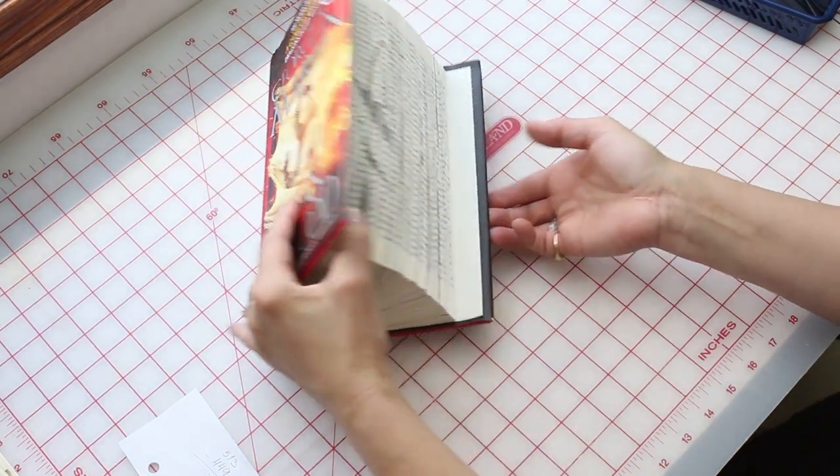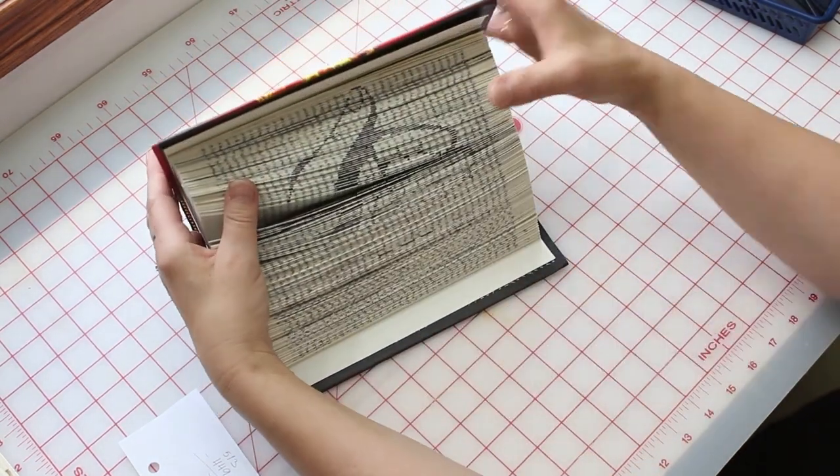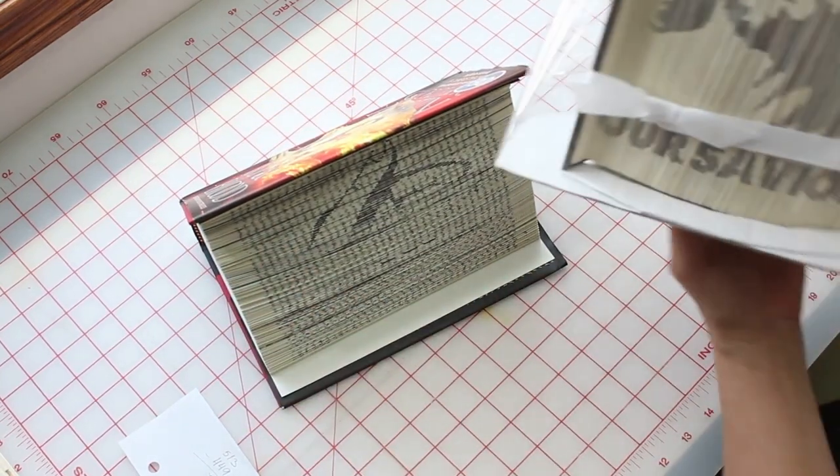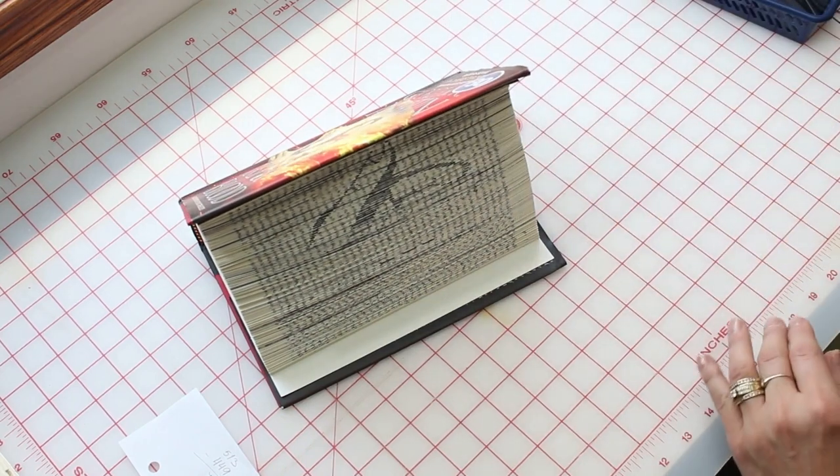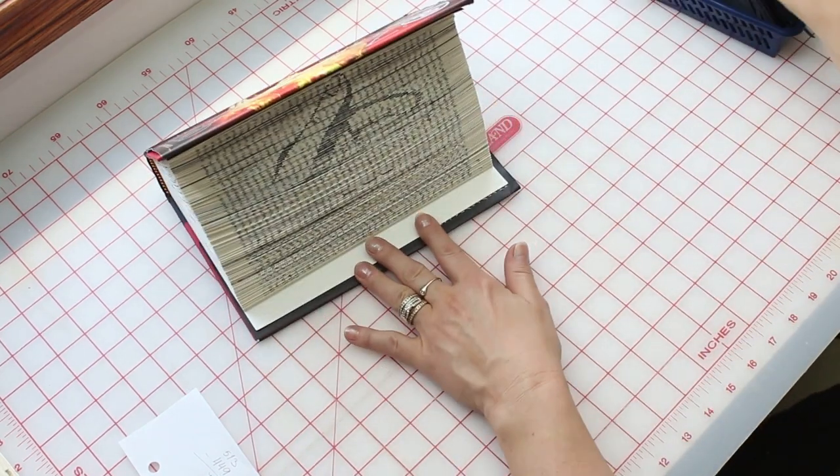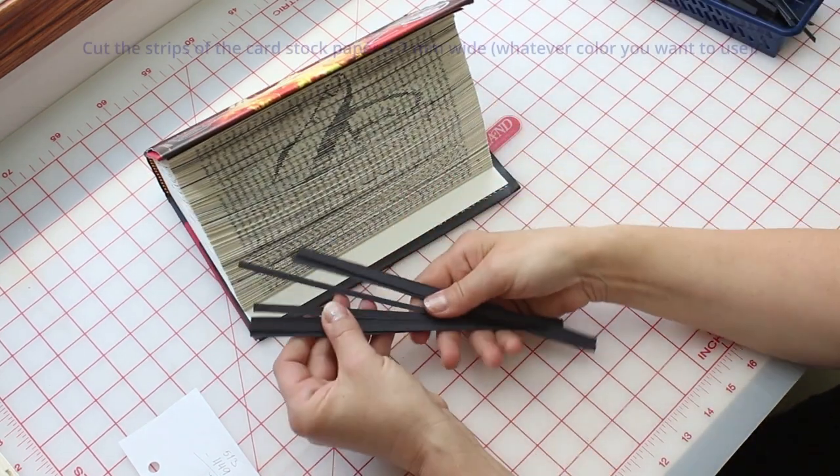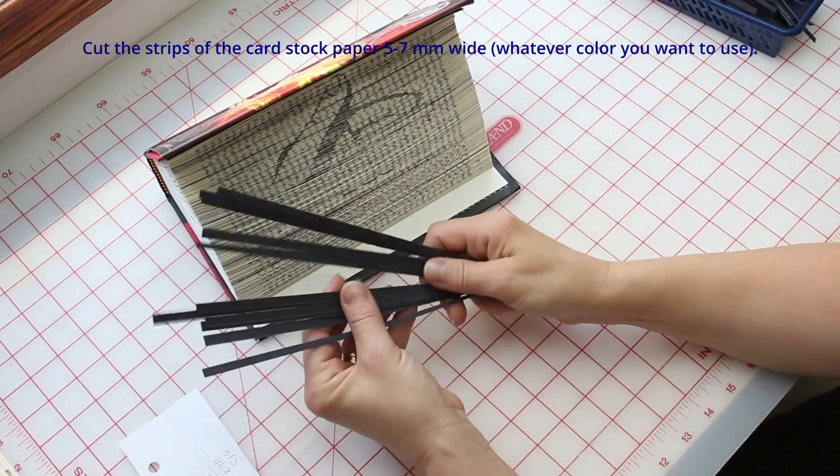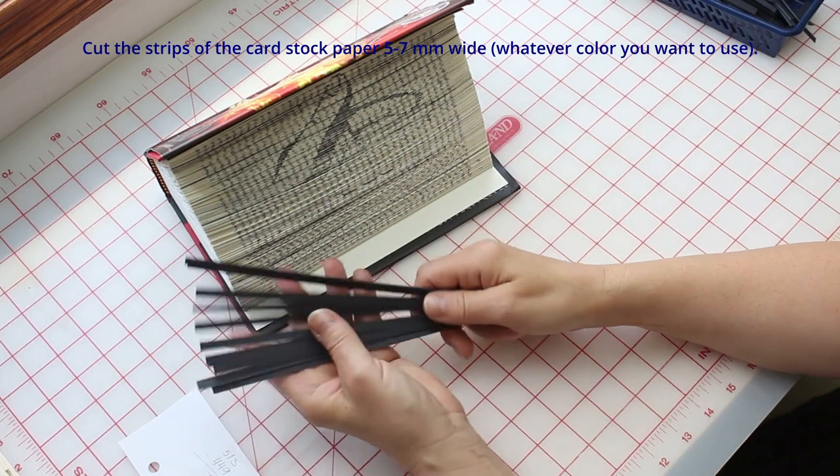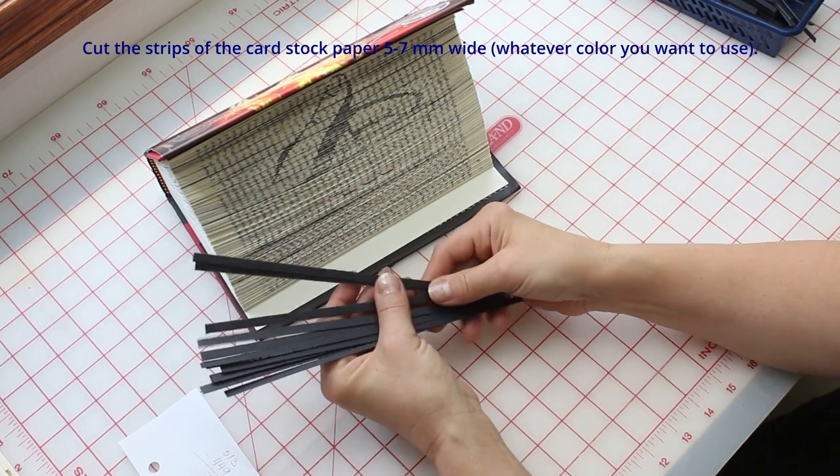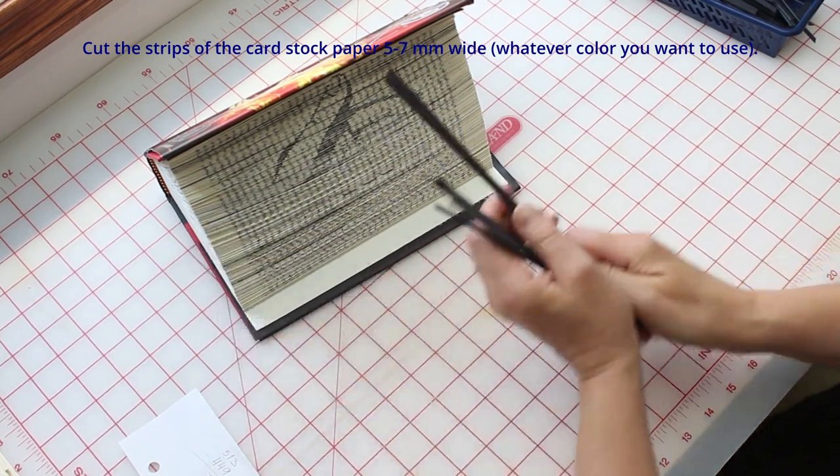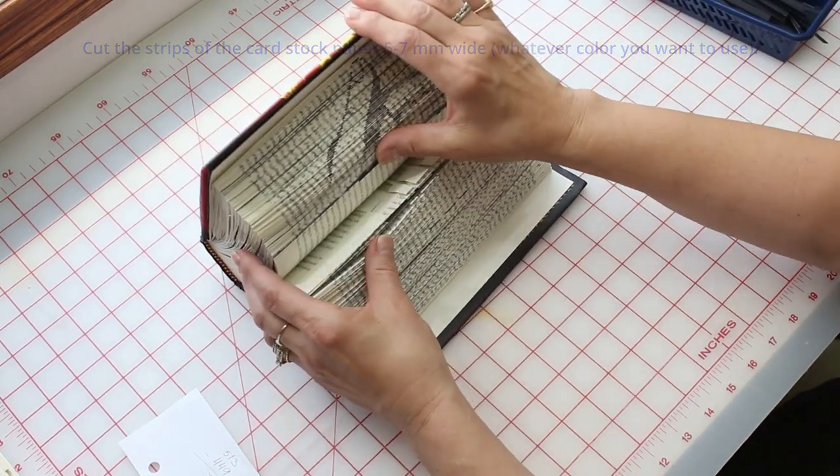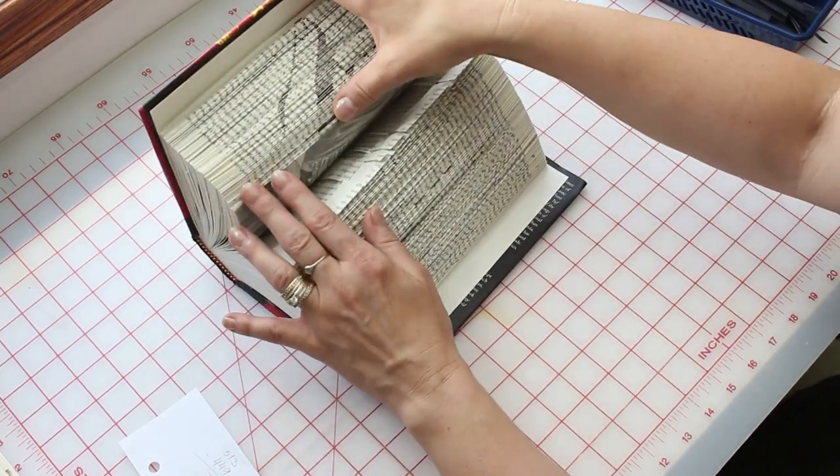With this book, same as I just showed you, I just glue strips of the black paper. It's just a black cardstock, and I'll just glue them on every page that was cut.